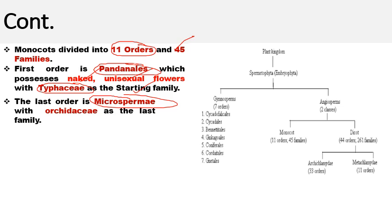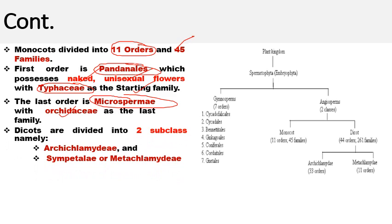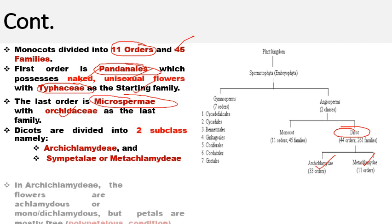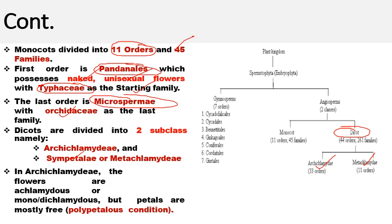The last order of monocots was Microspermae, and the last family in this group was Orchidaceae. Dicots were divided into two subclasses: Archichlamydeae and Metachlamydeae. Metachlamydeae is also called Sympetalae, meaning the petals or accessory floral whorls are fused — a gamopetalous condition. In Archichlamydeae, petals or accessory floral whorls are free — a polypetalous condition — and flowers may be achlamydeous or monochlamydeous.